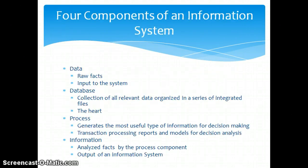One of the main things discussed in Chapter 1 is the four components of an information system, which are data, database, process, and information.